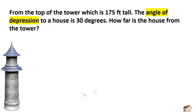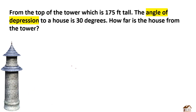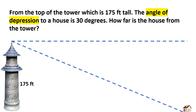What is the right way of illustrating the angle of depression? First, you have to draw the tower — this is 175 feet. The right way to show angle of depression is from a straight horizontal line going down. So this is the correct way of illustrating the angle of depression, and this is 30 degrees.